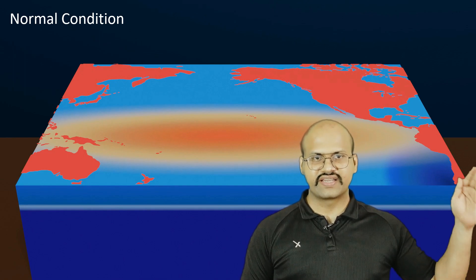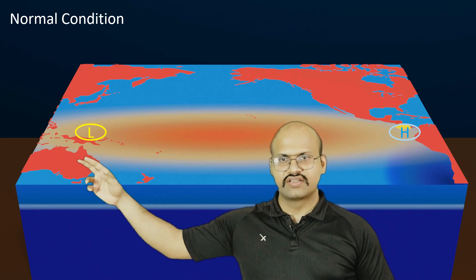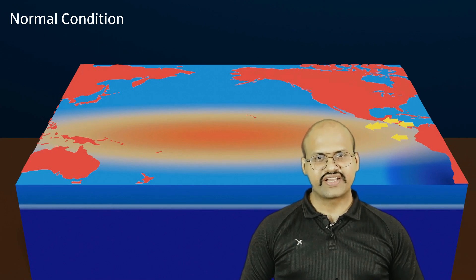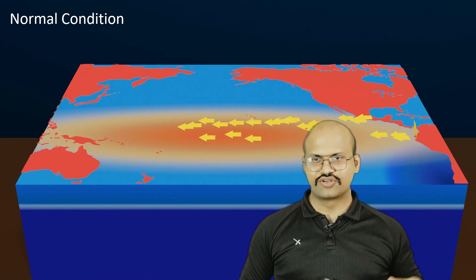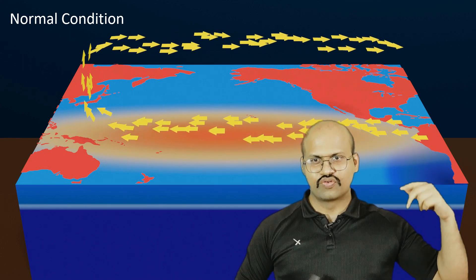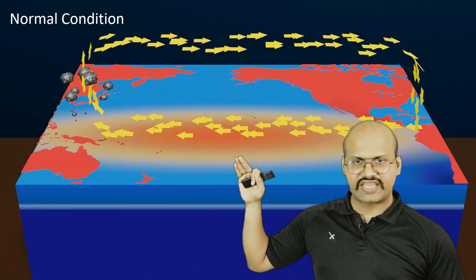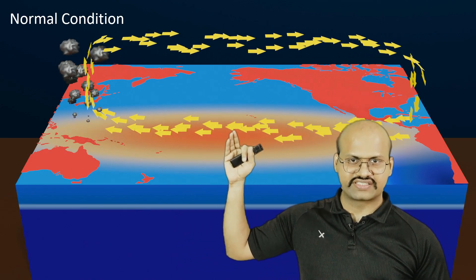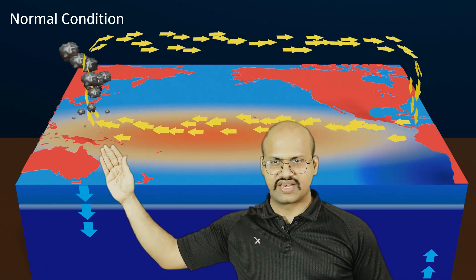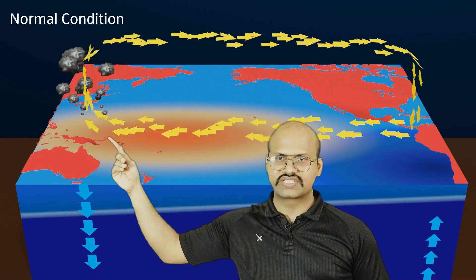There is a high pressure region over the South American side and a low pressure region over Australia. Wind currents flow from higher pressure to lower pressure, so a wind current flows from the South American side toward Australia. This wind current applies a dragging force on the warm water in the central Pacific Ocean, dragging it toward Australia, causing a concentration of warm water in the Australian region.